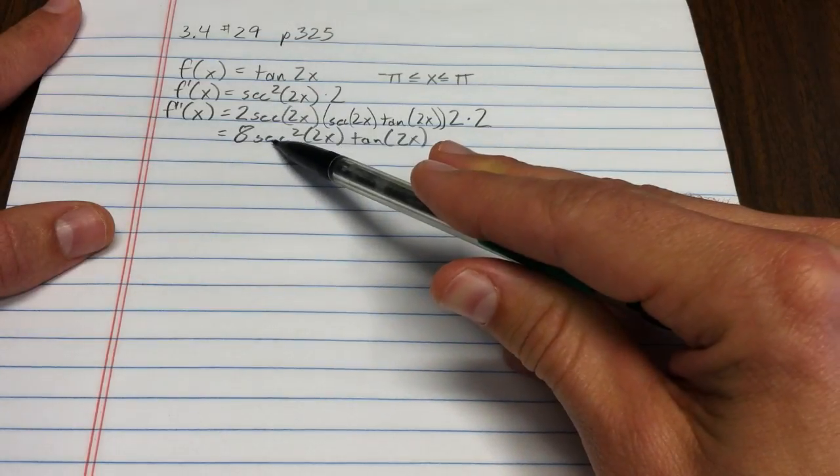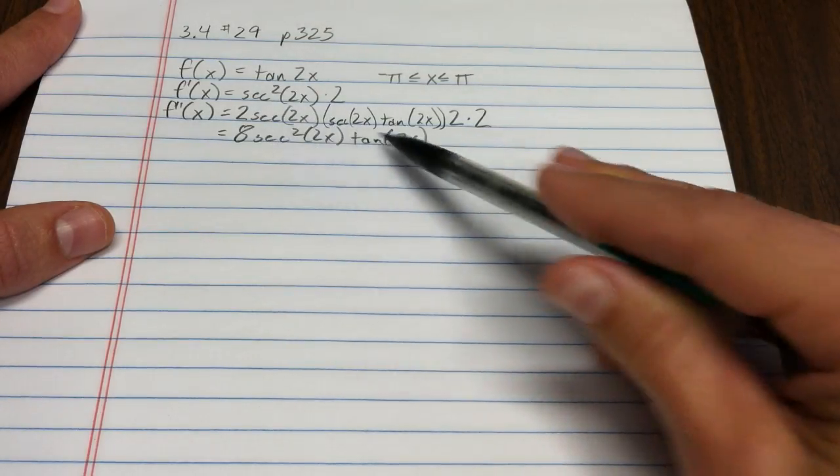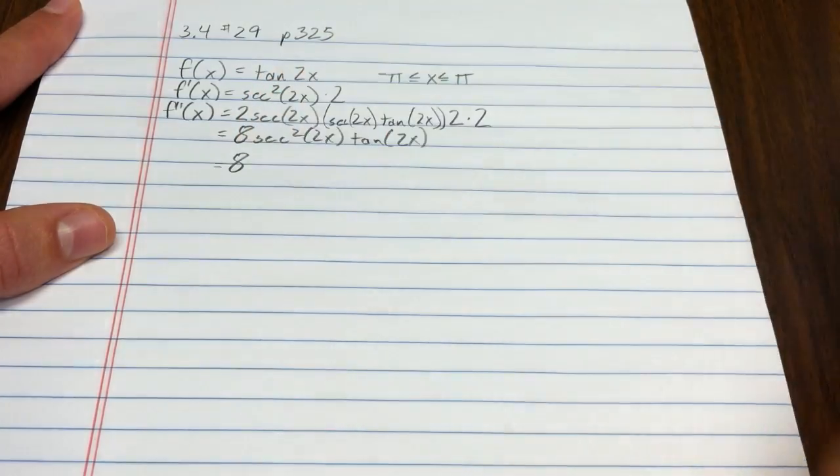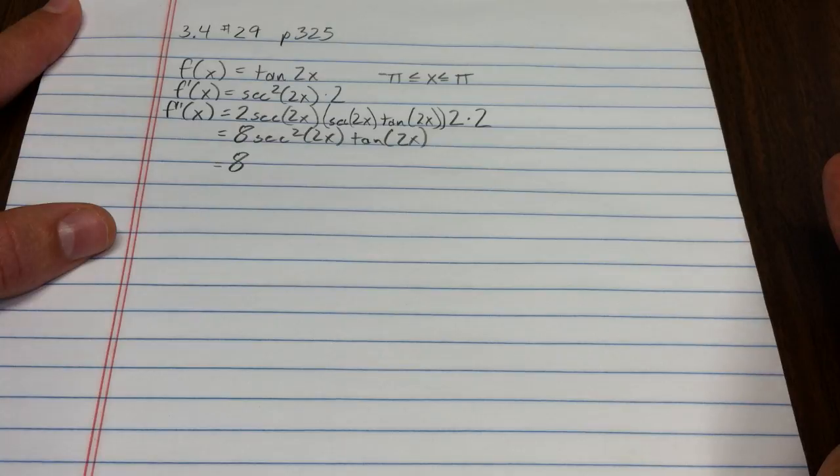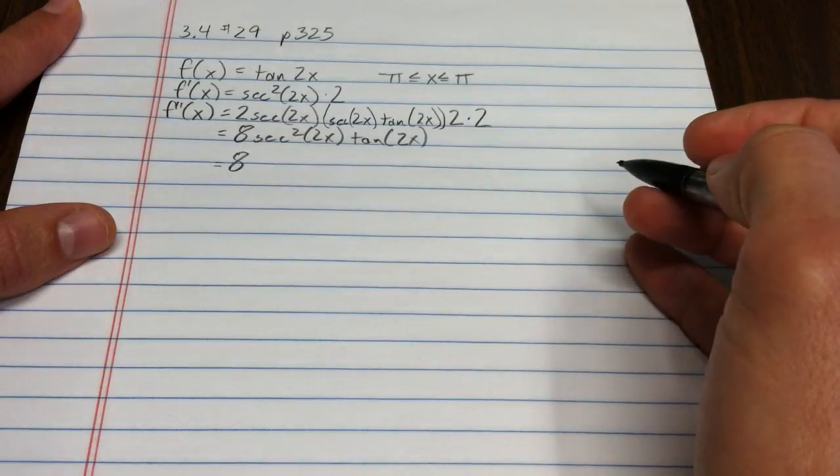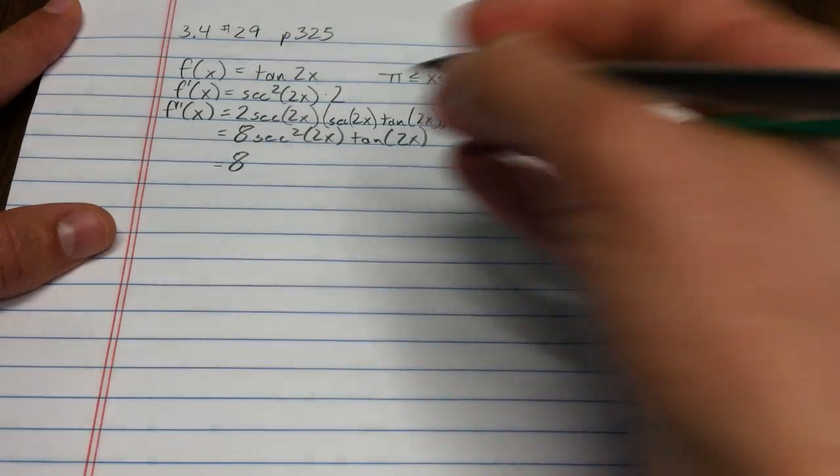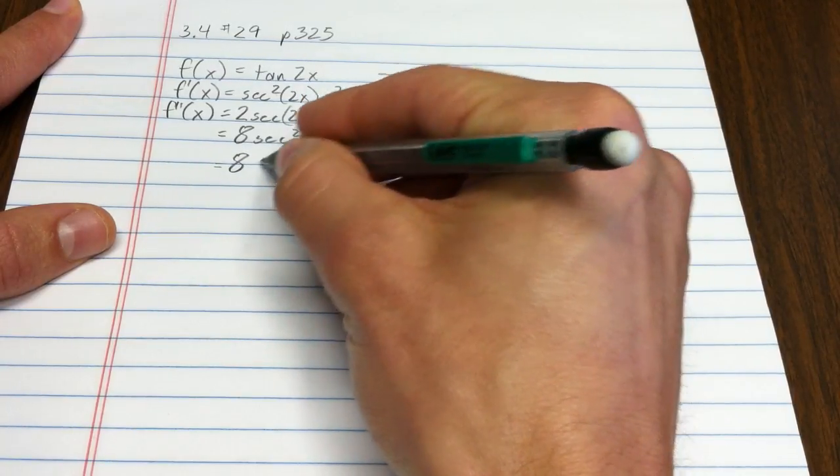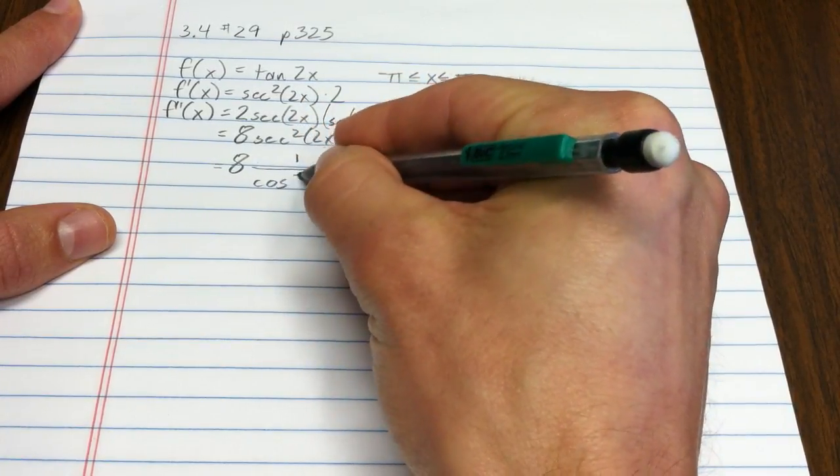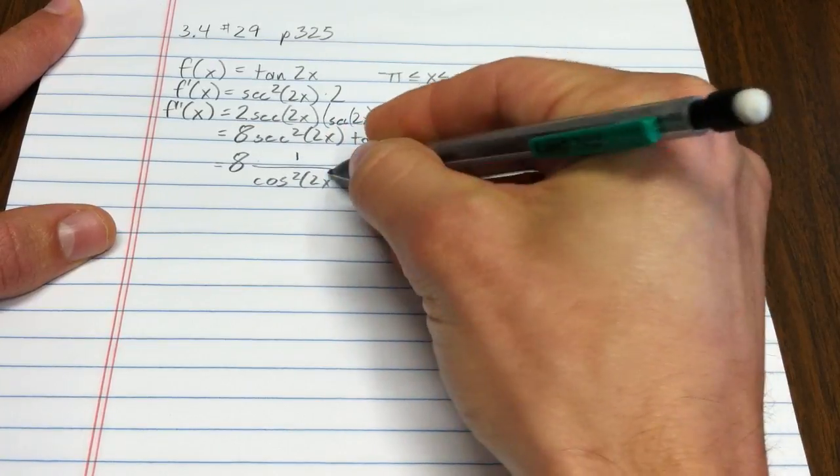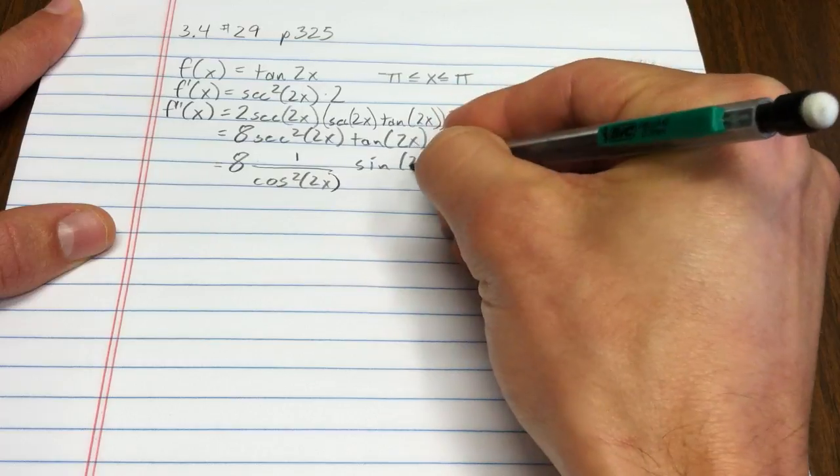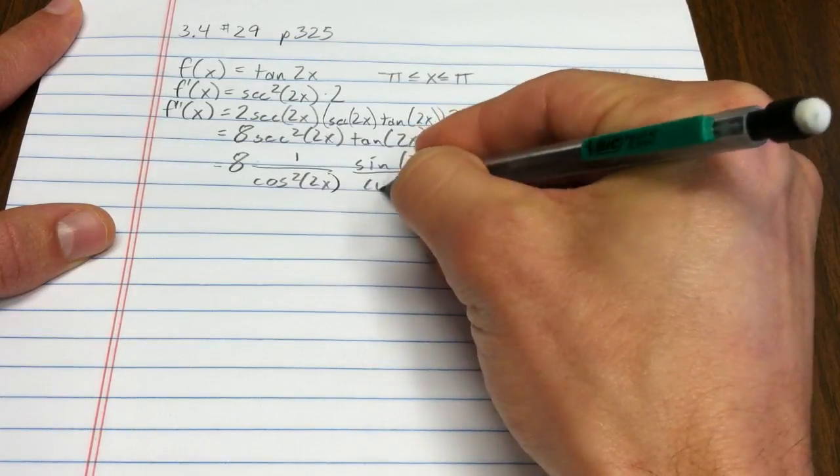What I think I'll do to determine that is I'll write secant and tangent in terms of the simpler trig functions. Maybe I have better intuition for that. So, how might I go about doing that? I might go, let's say secant is 1 over cosine. Tangent is sine over cosine.